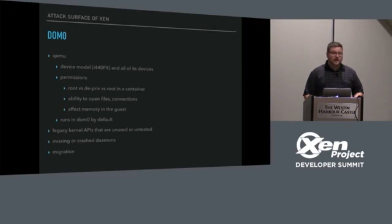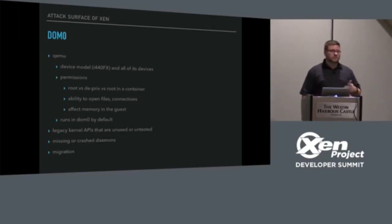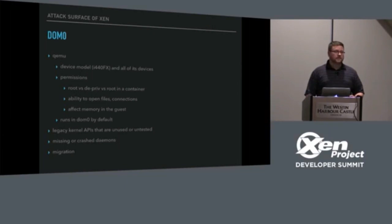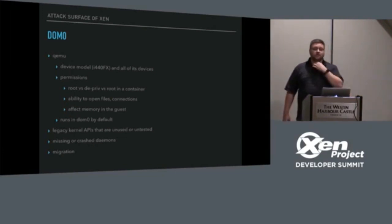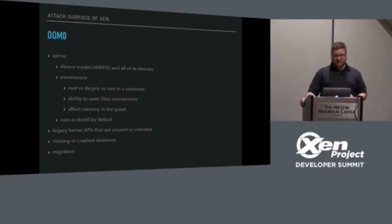With Xen, we've also got a number of legacy APIs that are unused or untested that can lead to problems. One I've been poking on the mailing list: if you use proc/xen/xenbus on a modern kernel in a Dom U, you're going to deadlock. It's just unused. Missing or crashed daemons — if you have XenStore go away, well, what happens? Not a good thing.